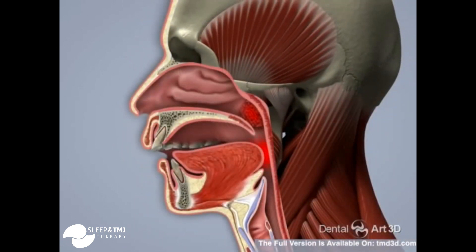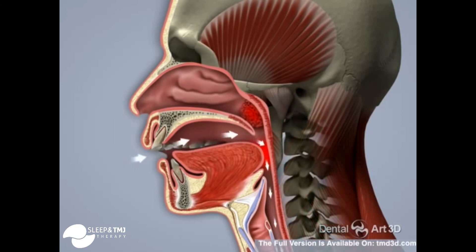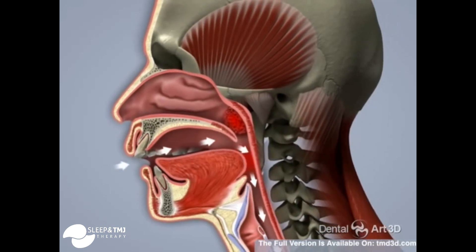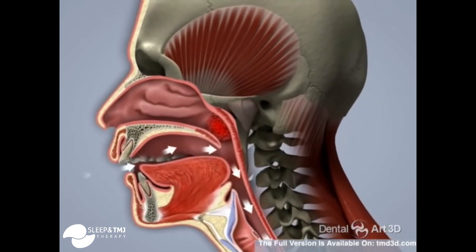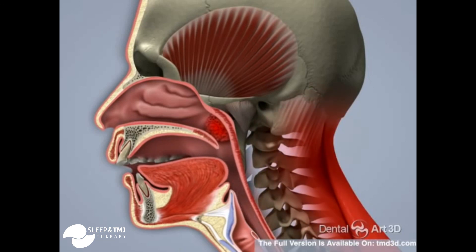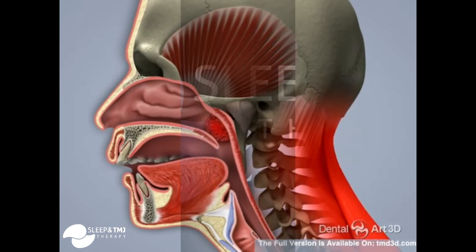A distally shifted jaw and tongue position result in even further restriction of the airway. In order to open up the airway, the neck moves forward and the head tilts backwards. This stresses the spine and fatigues the neck muscles, which results in neck, back, and shoulder pain.